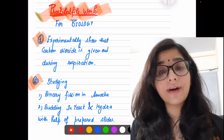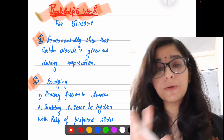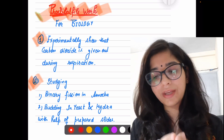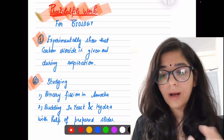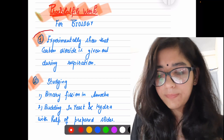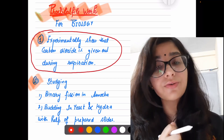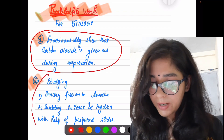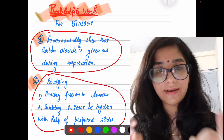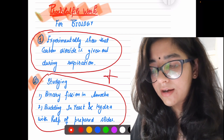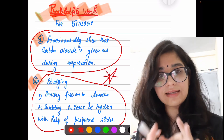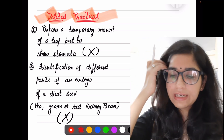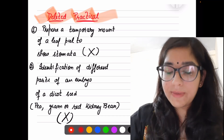Now about practical file work: in Science you have two things — a project and a practical file. In the practical file, only two practicals are to be written down this time because two have been deleted from the syllabus. First: experimentally show that carbon dioxide is given out during respiration. Second: Binary Fission in Amoeba, and Budding in Yeast and Hydra with the help of a permanent slide. Only these two practicals are for your practical file work this time.